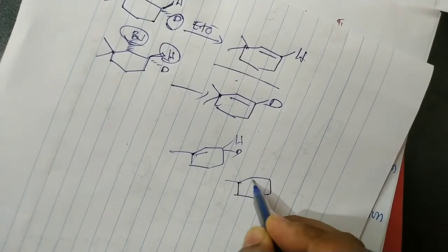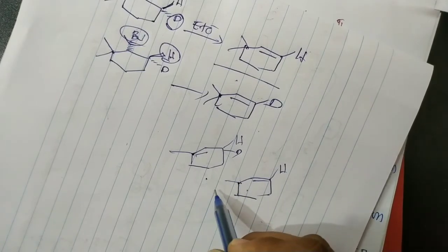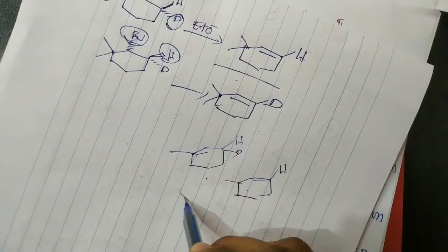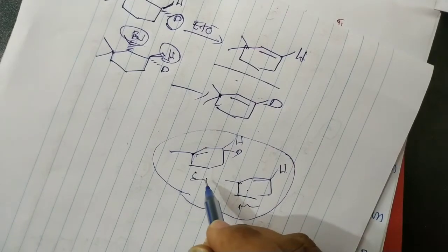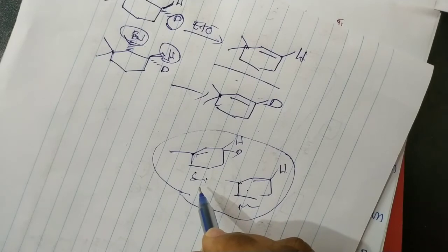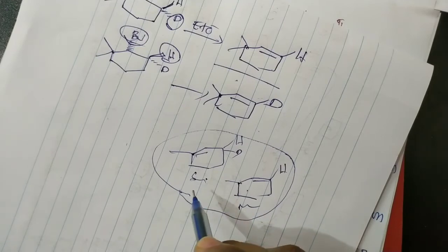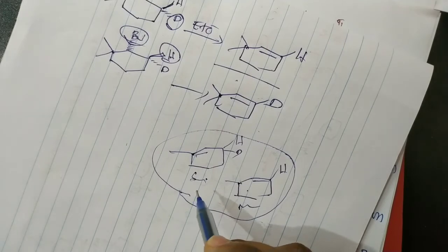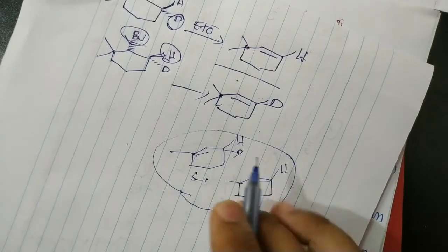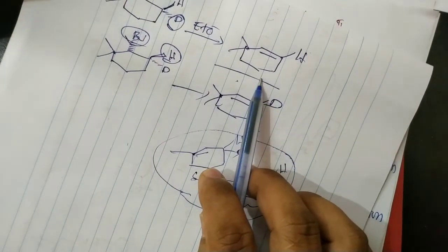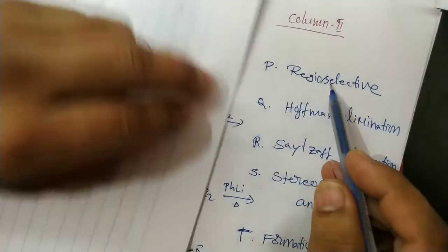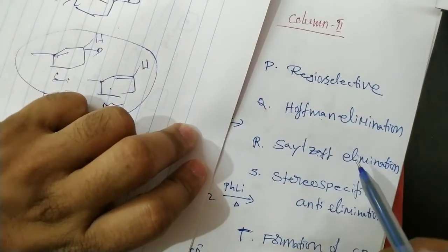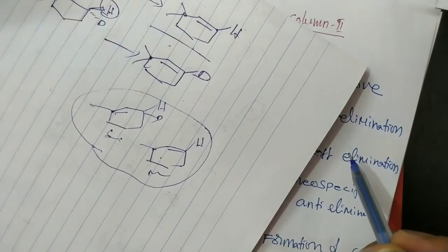For example, if there were methyl, hydrogen and deuterium configured differently, and two products could form, then we could call one the Saytzeff product and one the Hoffman product, and it would be regioselective. But here only one alkene is possible, so it is not regioselective.